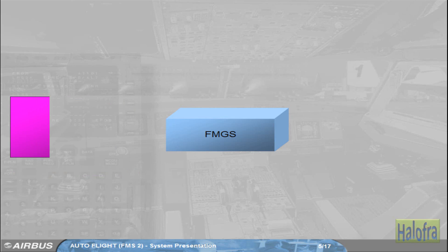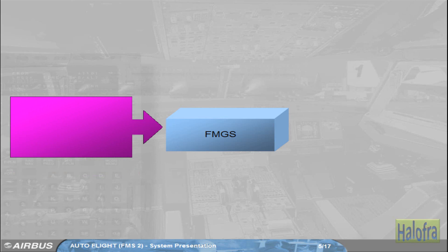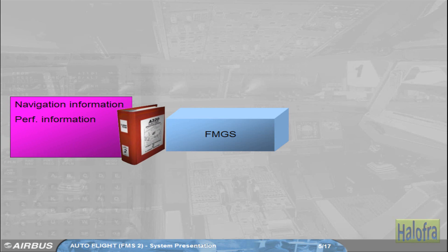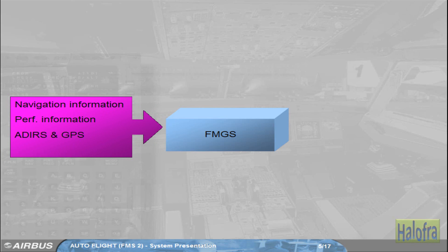The FMGS receives navigation information, which contains details of airfields, nav aids, airways, routes, waypoints, procedures, SIDs, STARs, approaches, missed approaches, etc. It also receives aircraft performance information, the air data and inertial reference system (ADIRS), and the global positioning system (GPS) for position and dynamic information. You will learn about them in the navigation chapter.